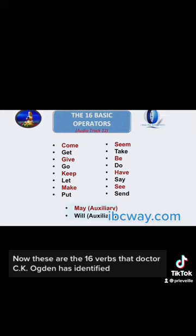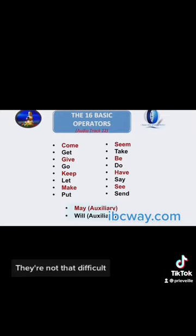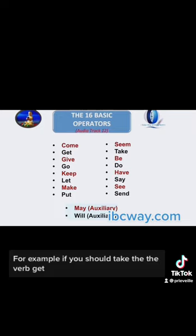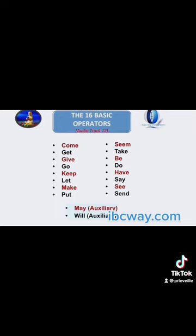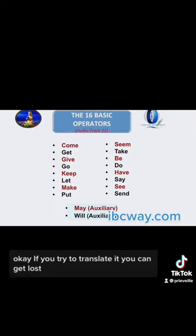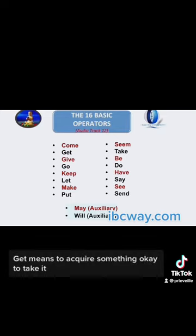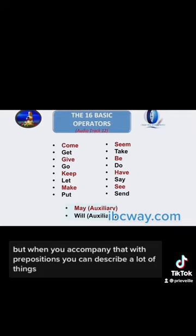These are the 16 verbs that Dr. CK Oakden identified. They're not that difficult, but he said they're essential — they can help you express a lot of things. For example, the verb 'get': if you try to translate it, you can get lost, because 'get' means to acquire something. But when you accompany it with prepositions, you can describe a lot of things.